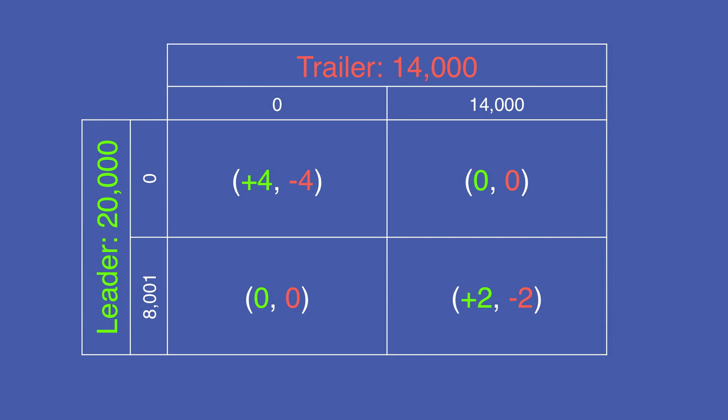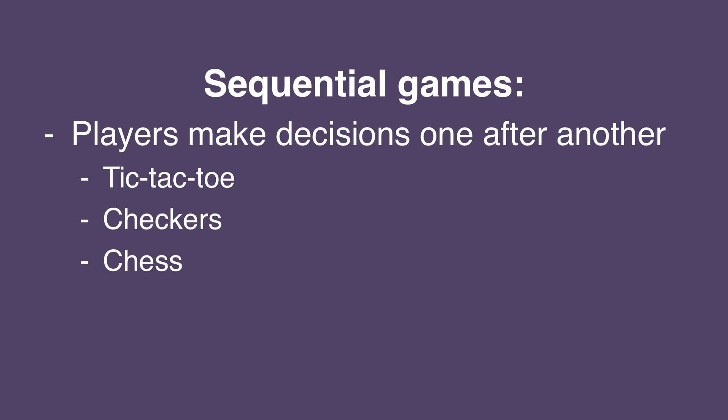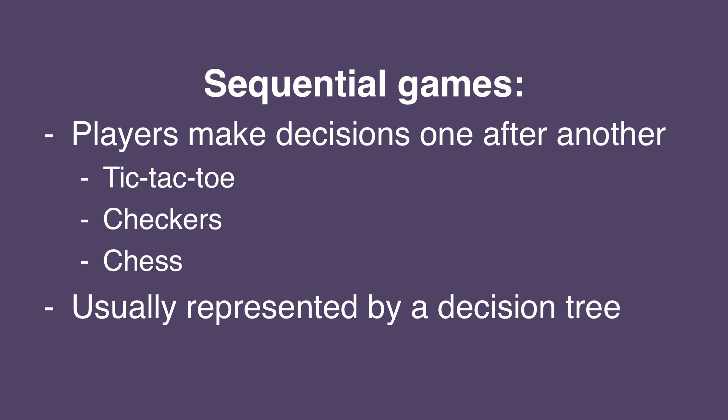Another type of game we often see in game theory is called a sequential game. Players make decisions one after another in a predetermined order. Examples include Tic-Tac-Toe, Checkers, and Chess. We usually represent sequential games in a decision tree.